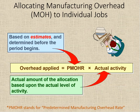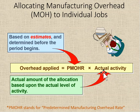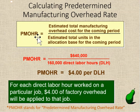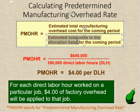To handle this, we apply a predetermined overhead rate, abbreviated PMOHR, and multiply it by some level of activity. We use an allocation base — whether direct labor costs or machine hours — and multiply that by the PMOHR. The PMOHR is calculated by taking the estimated total manufacturing overhead cost for the period and dividing it by the estimated total units in the allocation base for the coming period.